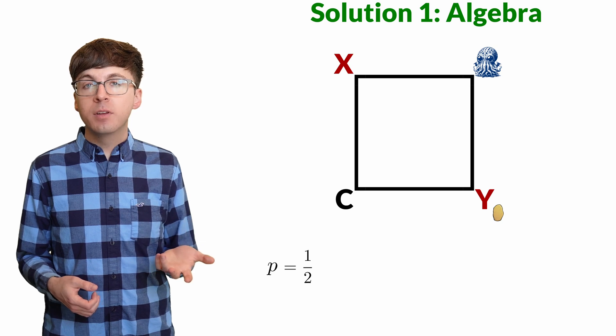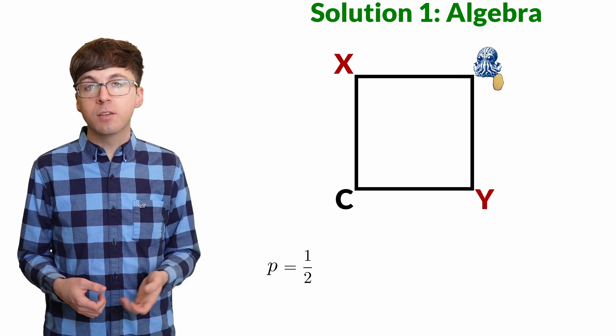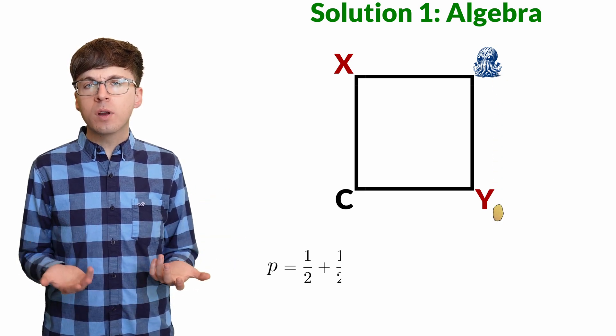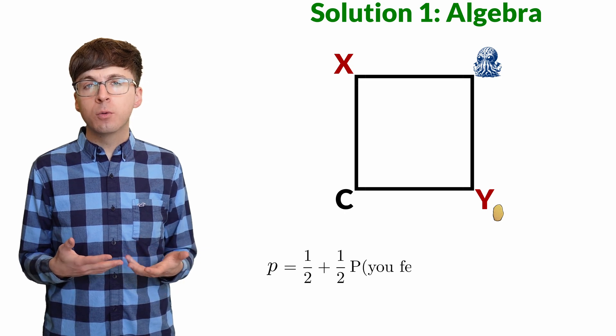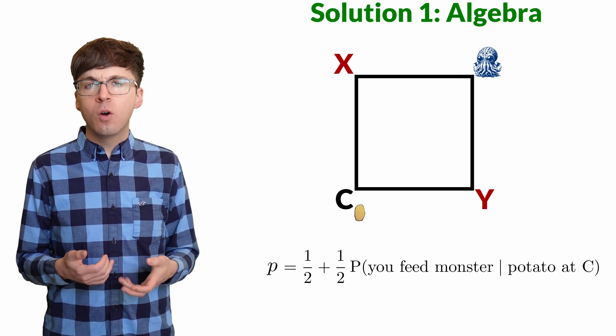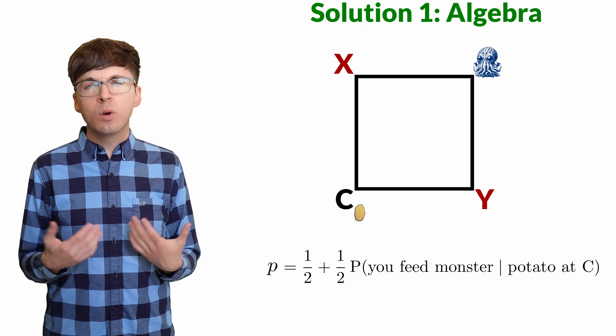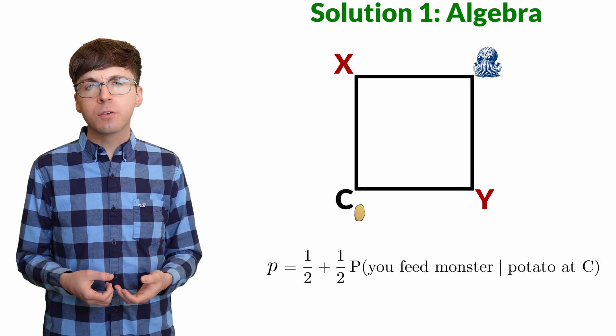There's a one-half probability we throw the potato directly to the monster. There's also a one-half probability that we throw the potato to the opposite corner. Once the potato is in that corner, what's the probability we feed the monster from there?